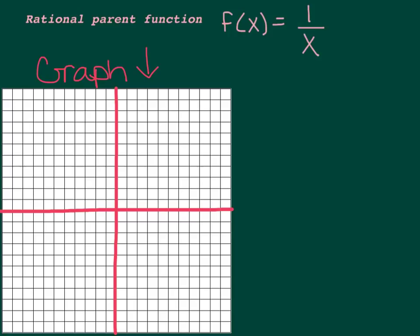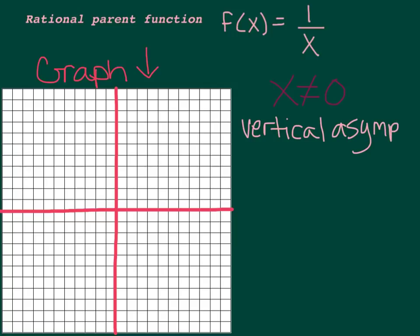So the rational parent function, the most basic rational function we can deal with, is y equals 1 over x. As we just said, you cannot divide by 0, so x can't be 0. That means that everywhere along the y-axis, we will not have a graph. So we're going to have a vertical asymptote — we dealt with asymptotes when we did exponential and logarithmic functions — at x equals 0. We'll sketch that into our graph every single time. Whenever we have a rational function, you take whatever's in the denominator, set it equal to 0, and that's what x cannot be. So we'll have a dashed line at x equals 0.